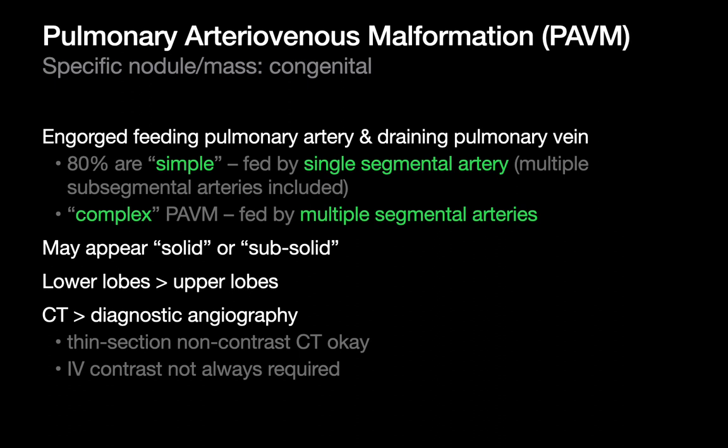Depending on the morphology of the PAVM, some may appear solid — they're actually just a homogeneous bag of blood. Some may appear subsolid, where you might be seeing lots of tiny PAVMs clustered together, looking like an intermediate density opacity. PAVMs tend to be more noticeable, larger, and more numerous in the lower rather than the upper lungs. We can diagnose them on CT angiography, but oftentimes they're pretty noticeable on even non-contrast imaging once they're not tiny.